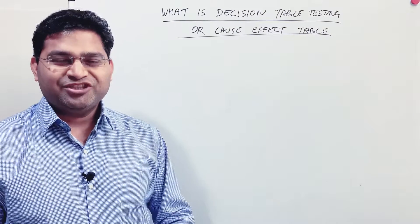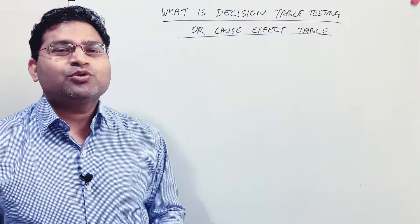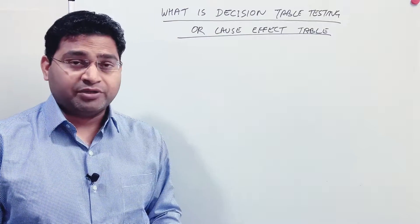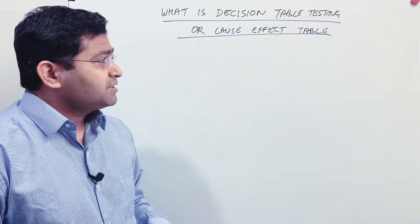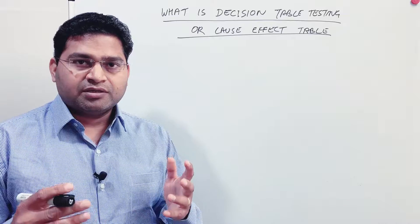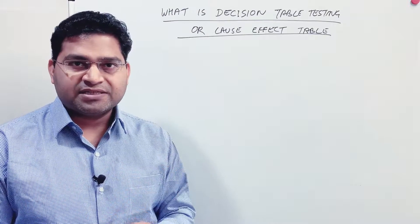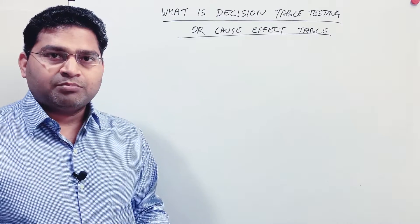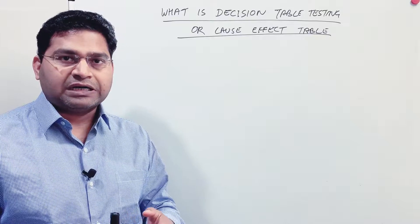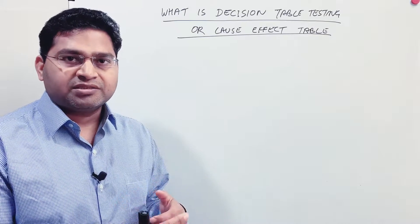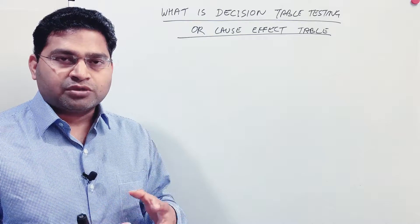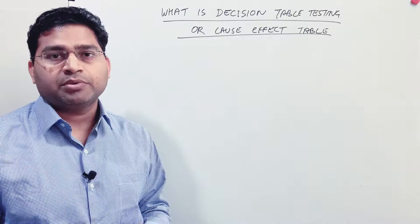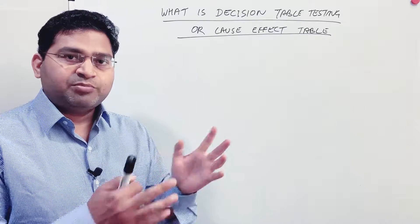Hello everyone, welcome again. In this software testing tutorial we are going to understand what is decision table testing, also known as cause-effect table. Decision table testing or cause-effect table is a software test design technique in black box testing that you utilize when you have multiple conditions and outcomes that are required to test. It is very useful in terms of business rule testing.